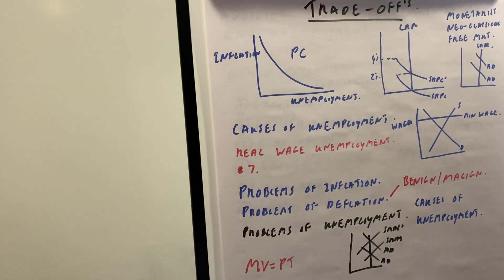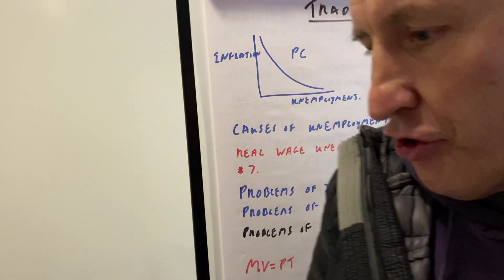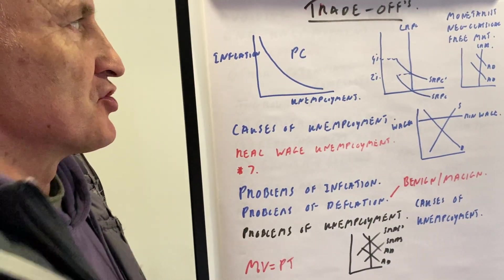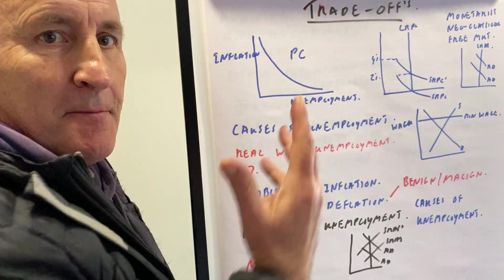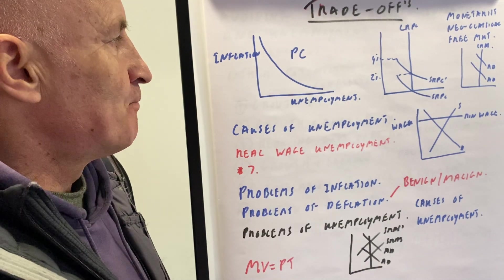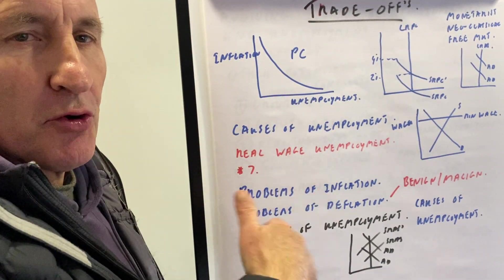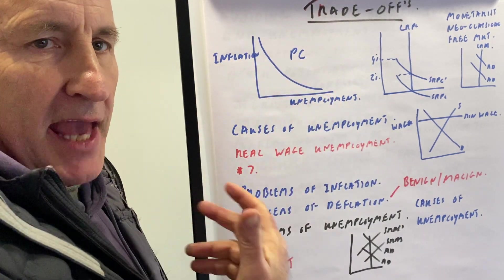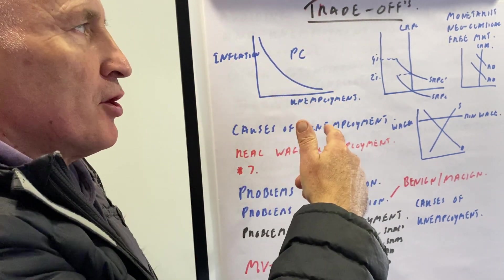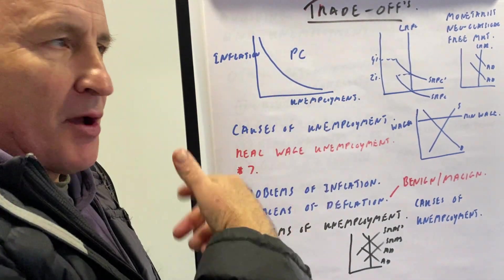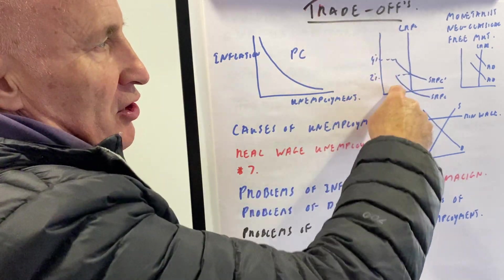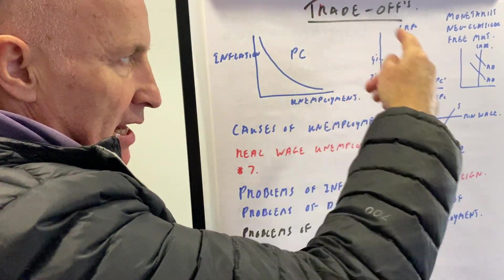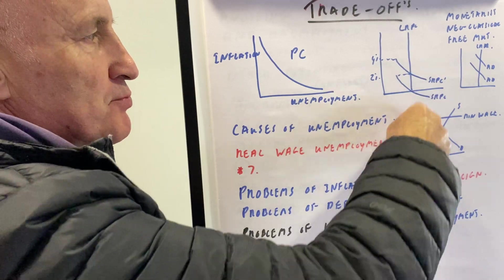This is the first lesson on economic growth. Previously we covered trade-offs, and the biggest trade-off in the whole system was the old Phillips curve, which said there was a clear trade-off between inflation and unemployment. Then we have the monetarist idea — the long-run Phillips curve — and we can explain this through money illusion and the movement from point A to B to C.